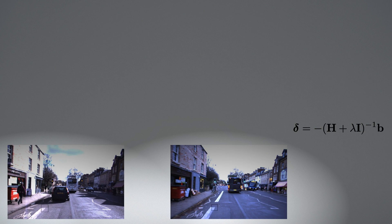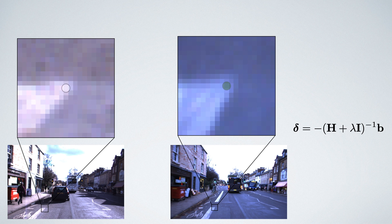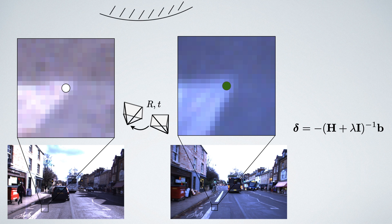I'd like to show an example of the typical behavior. These points show the ground truth correspondence. In practice, we start with a slightly wrong solution for the pose, so the projected point position is also a couple of pixels away.